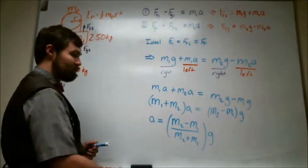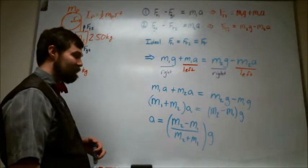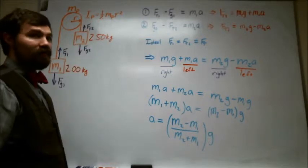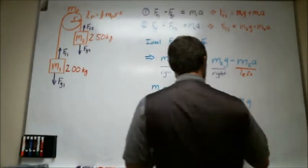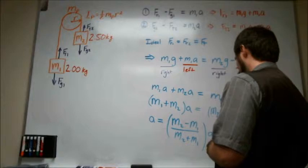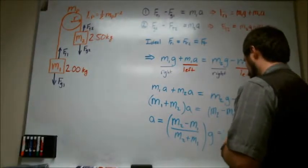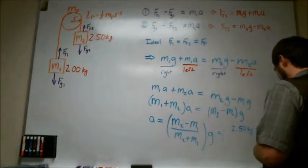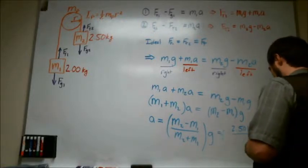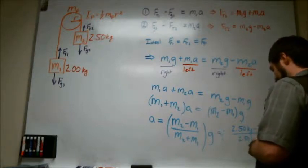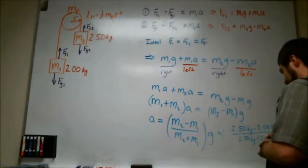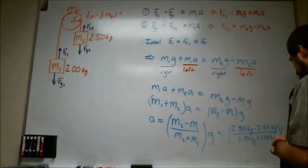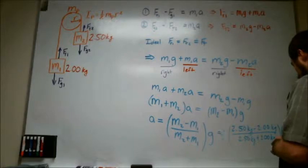We've got now a solution for acceleration in the ideal case. If we have a 2 kg mass and a 2.5 kg mass, what that ends up looking like is that we have 2.5 kg minus 2.0 kg divided by 2.5 kg plus 2.0 kg times 9.80 meters per second squared.